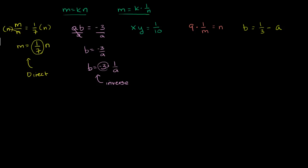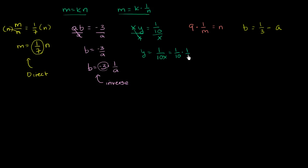Next, xy = 1/10. Let's divide both sides by x. We get y = (1/10)/x, which is the same as 1/(10x), which equals (1/10)·(1/x). So y equals some constant times 1/x. This is also inverse variation.